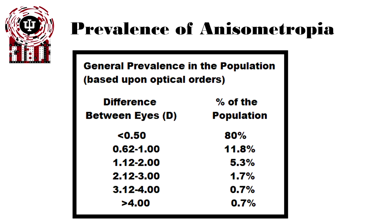Generally, in the general population, the difference between the two eyes is relatively low. About 90% of the population has less than one diopter difference between the two eyes. About 7% are within two diopters between the two eyes. Anisometropia above three diopters is relatively uncommon — less than 1% of the population.